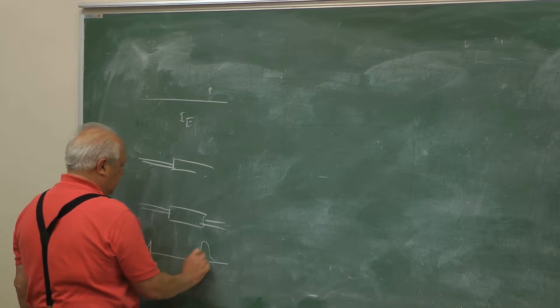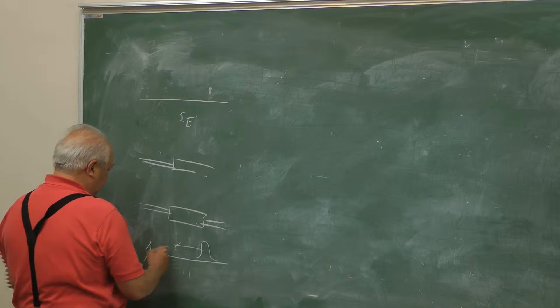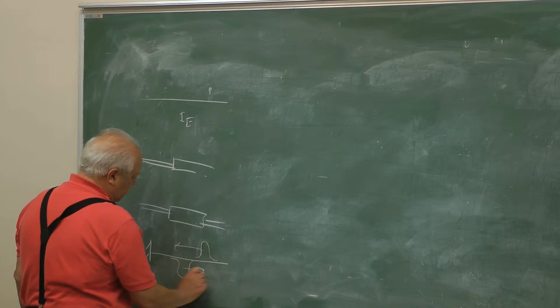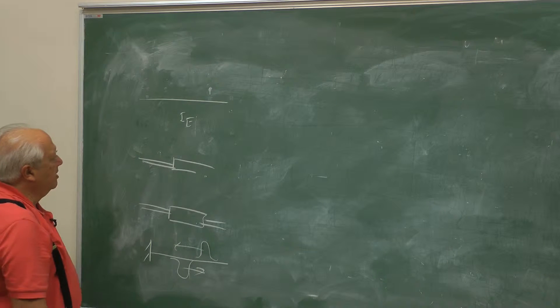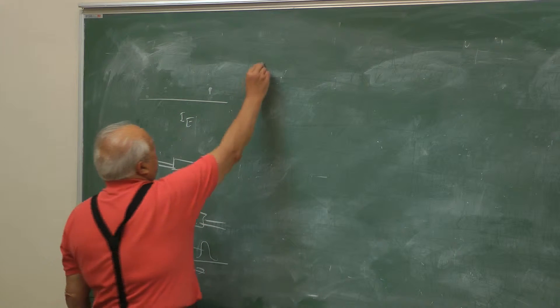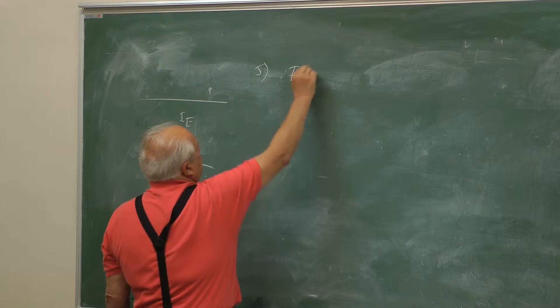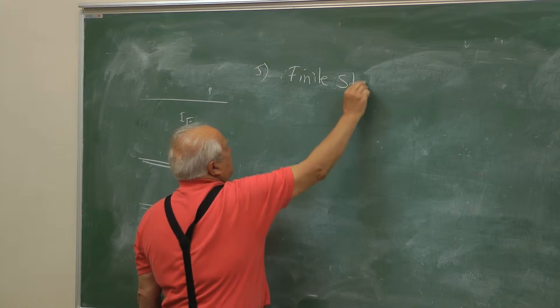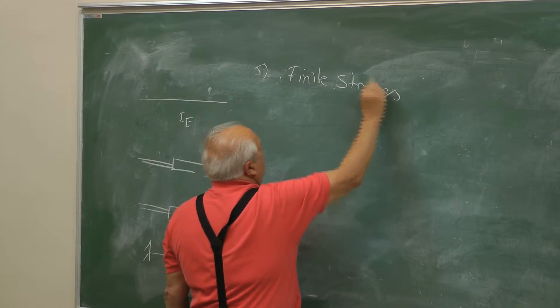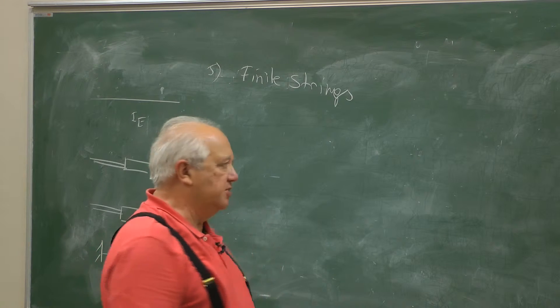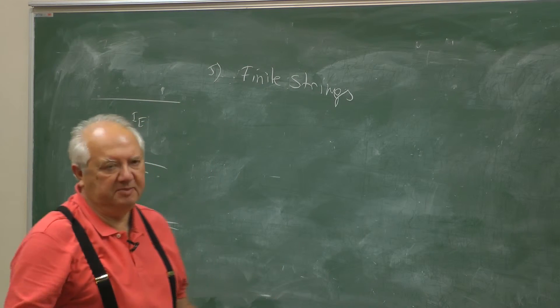We have seen that this thing comes and then flips and goes back. Now we shall consider as the fifth item in the list, finite strings. Of course, this is the basic physics of string instruments, highly simplified.